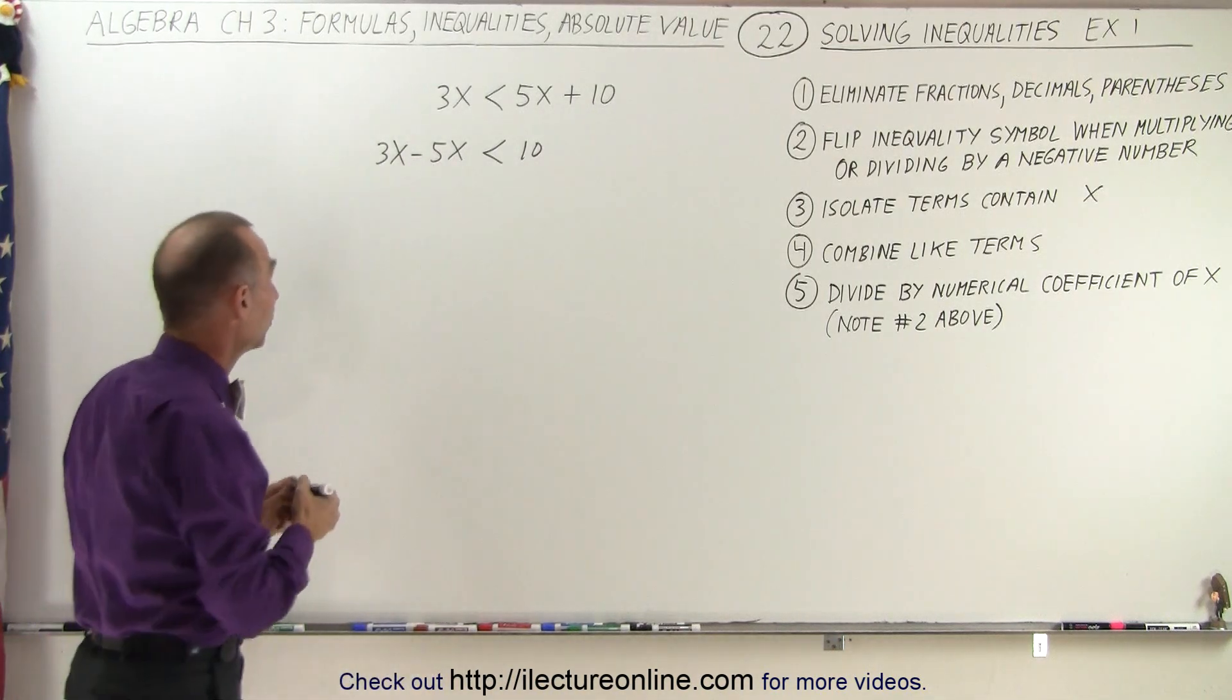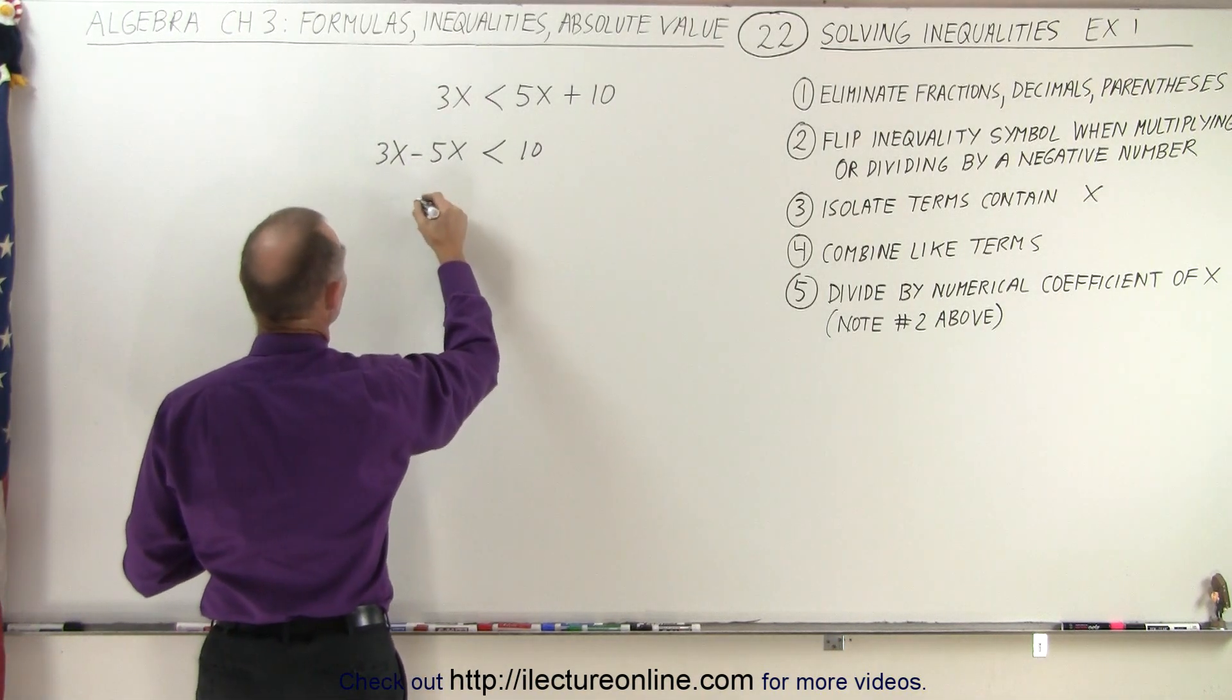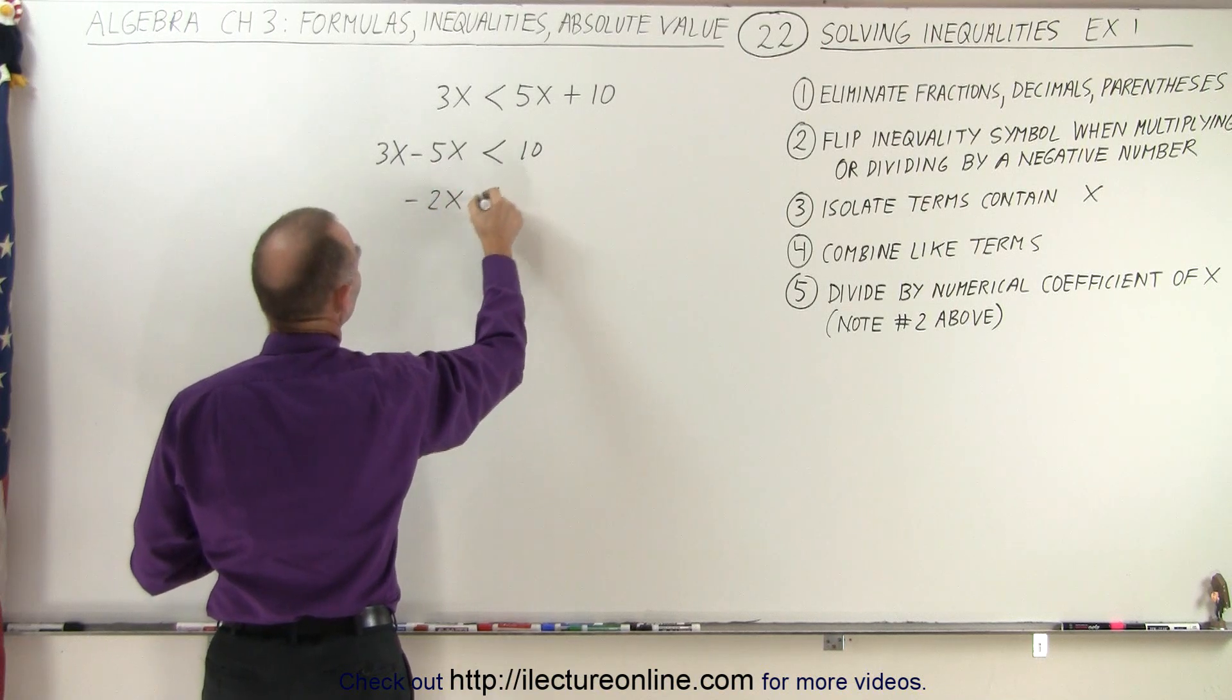Now we combine like terms. 3x minus 5x is minus 2x is less than 10.